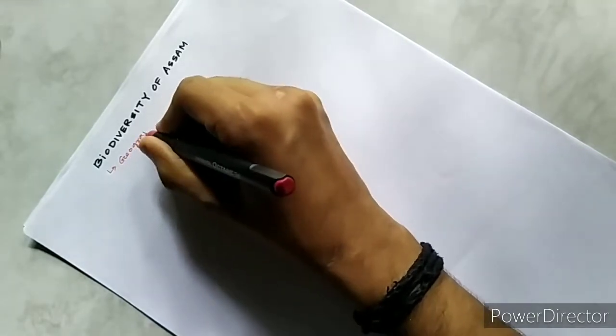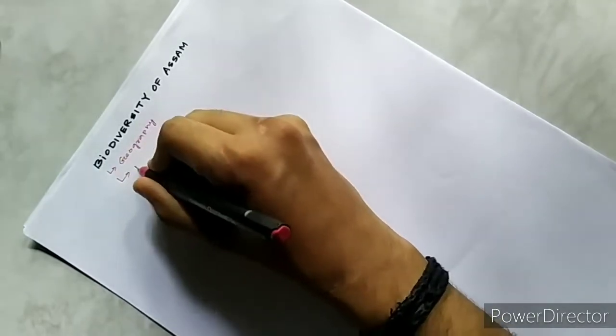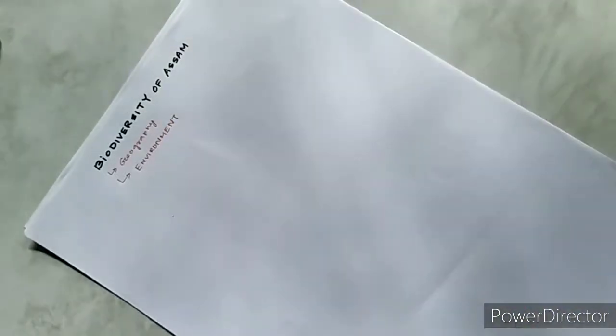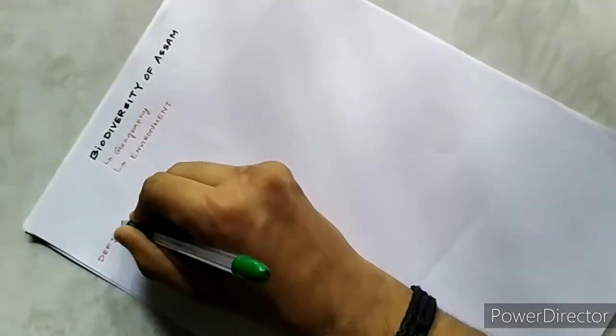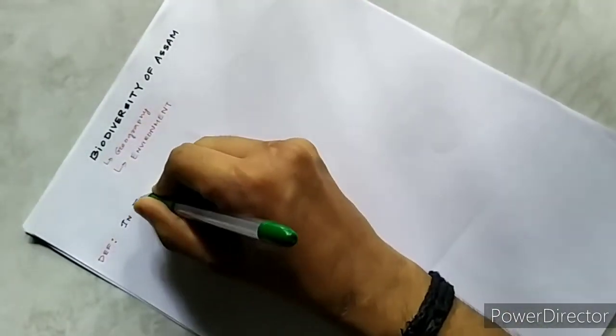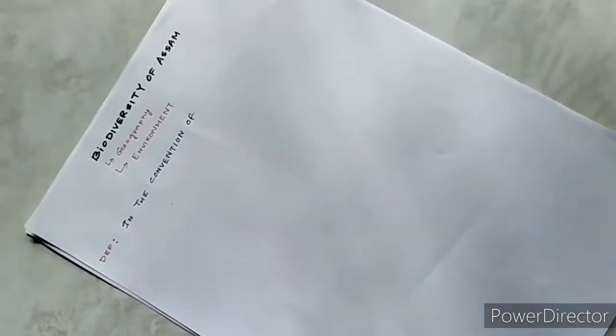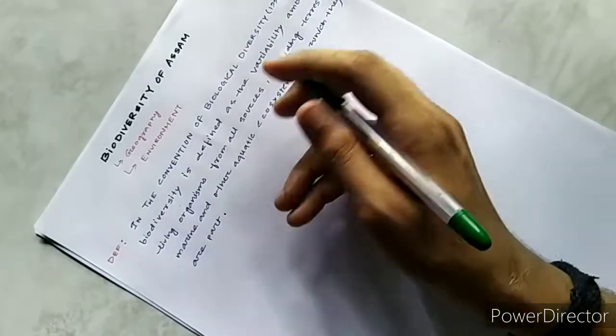We will first see the definition of biodiversity. You can simply quote the definition as in the Convention of Biological Diversity 1992. Biodiversity is defined as the variability among living organisms from all sources including terrestrial, marine and other aquatic systems of which they are a part.